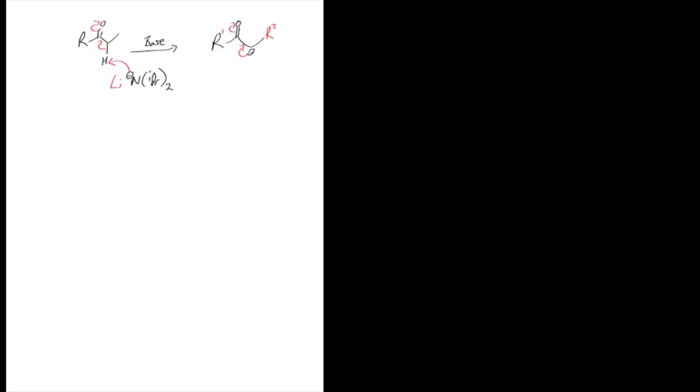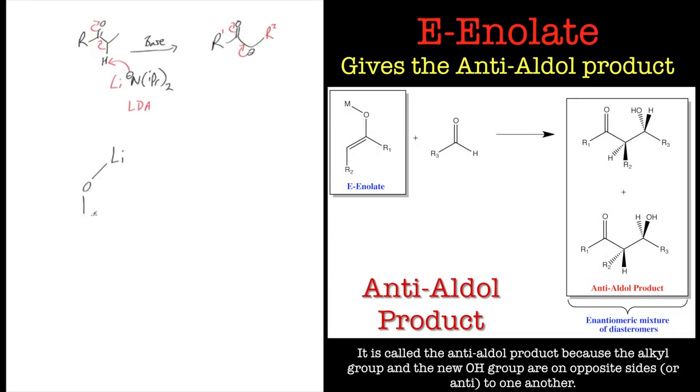So just to reiterate, deprotonation with LDA or any strong base will give us two types of enolate, the E and the Z enolate.